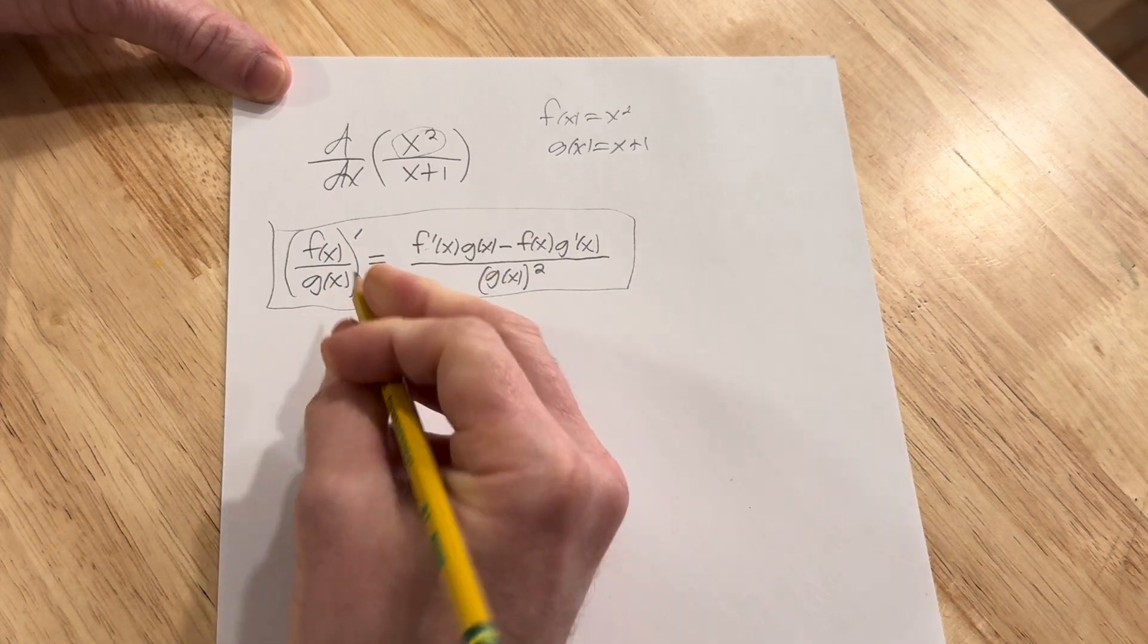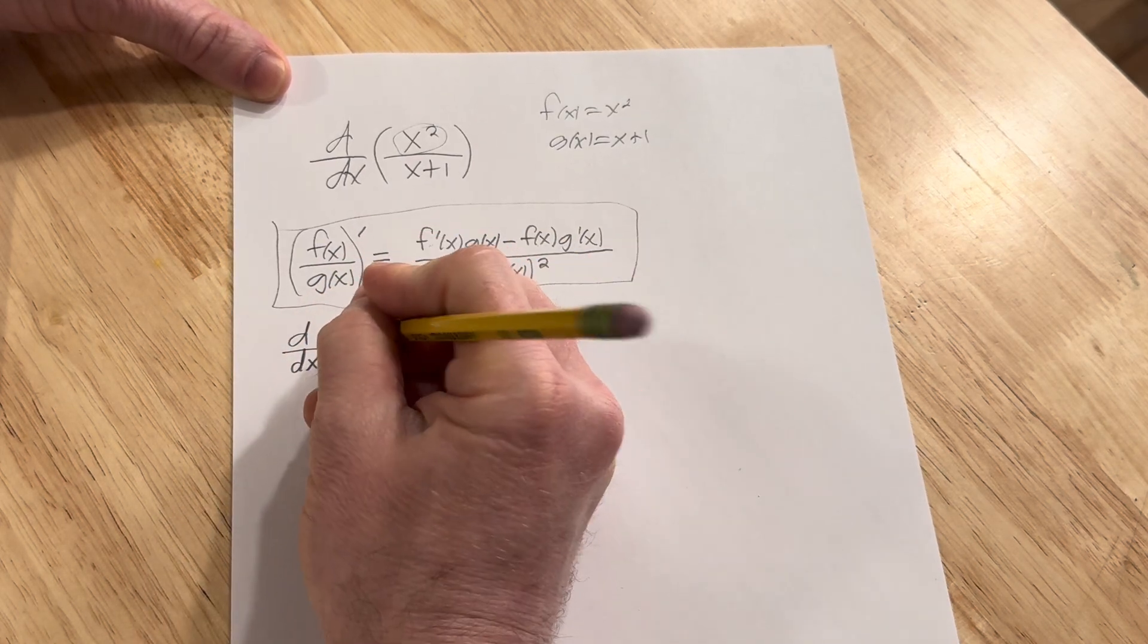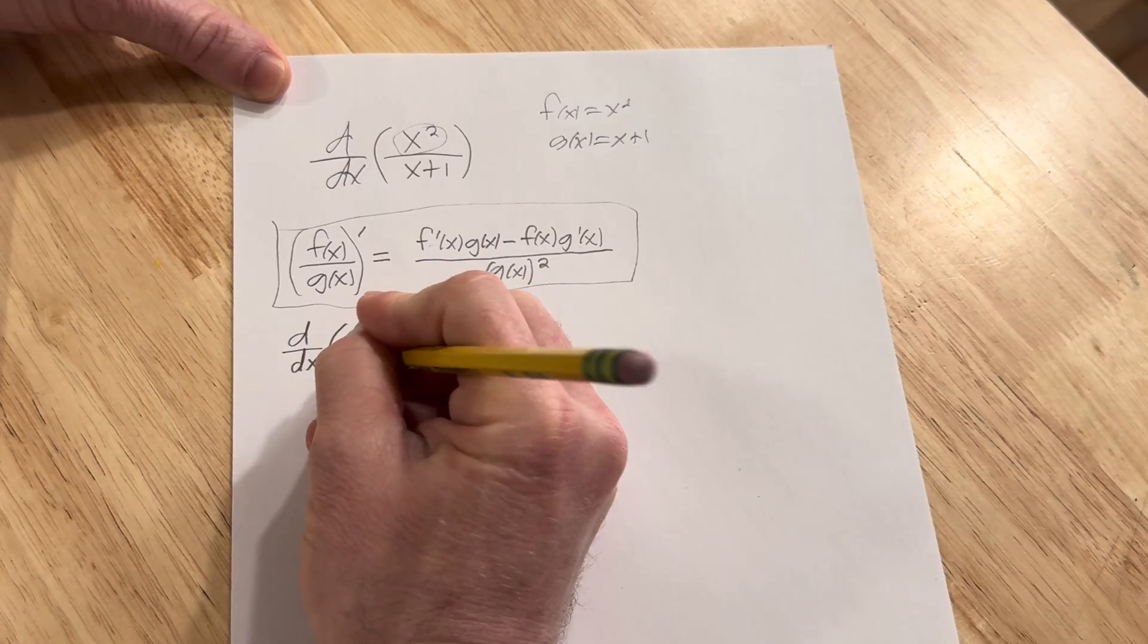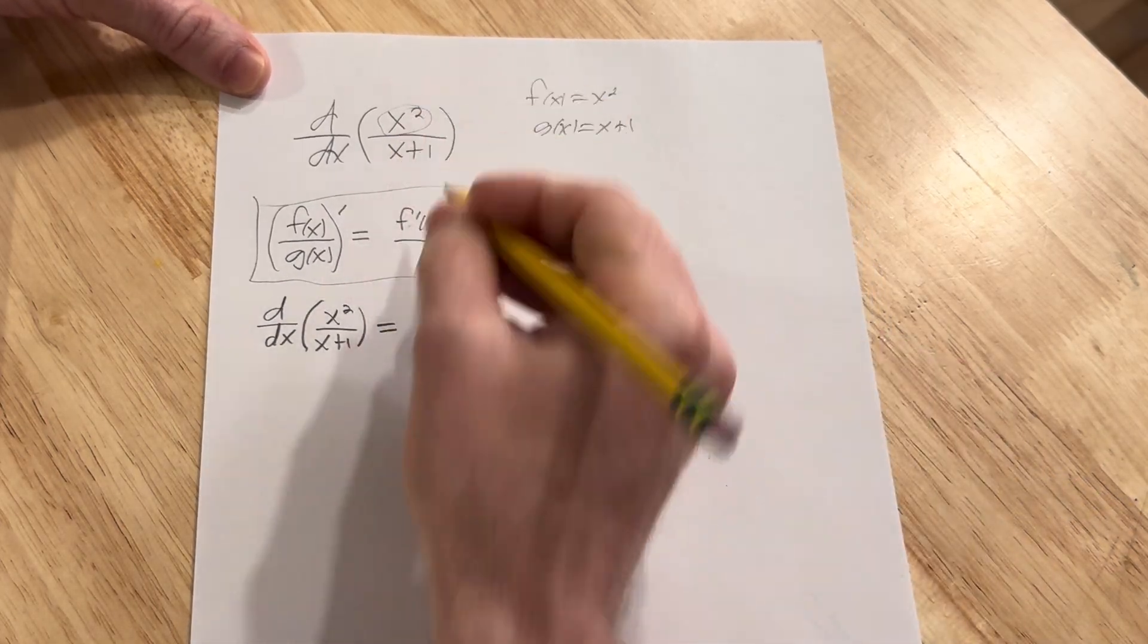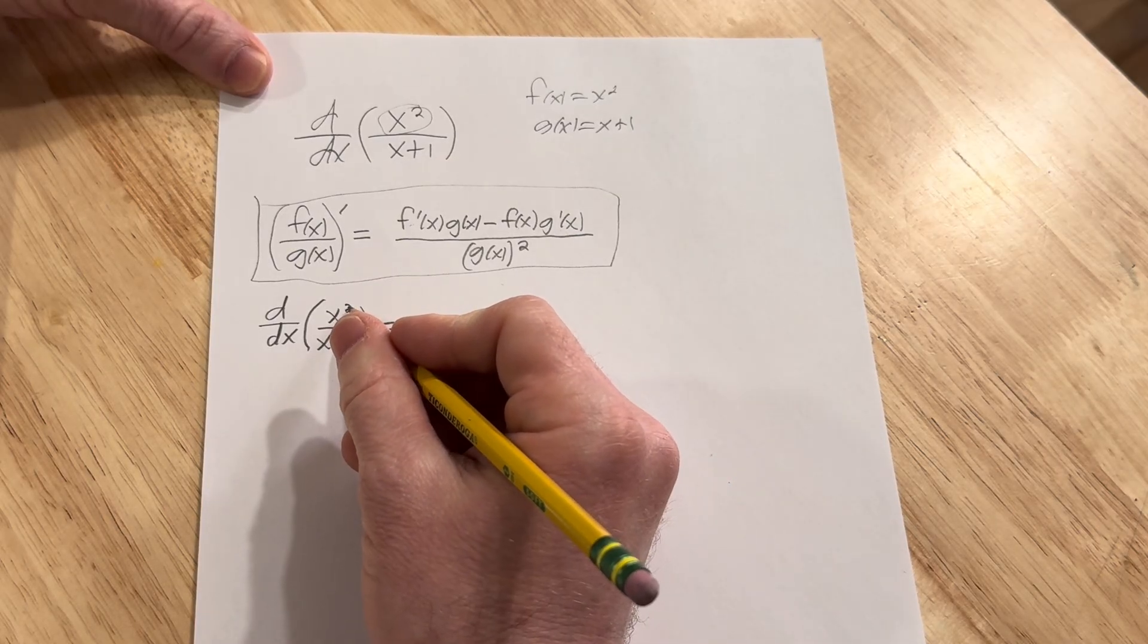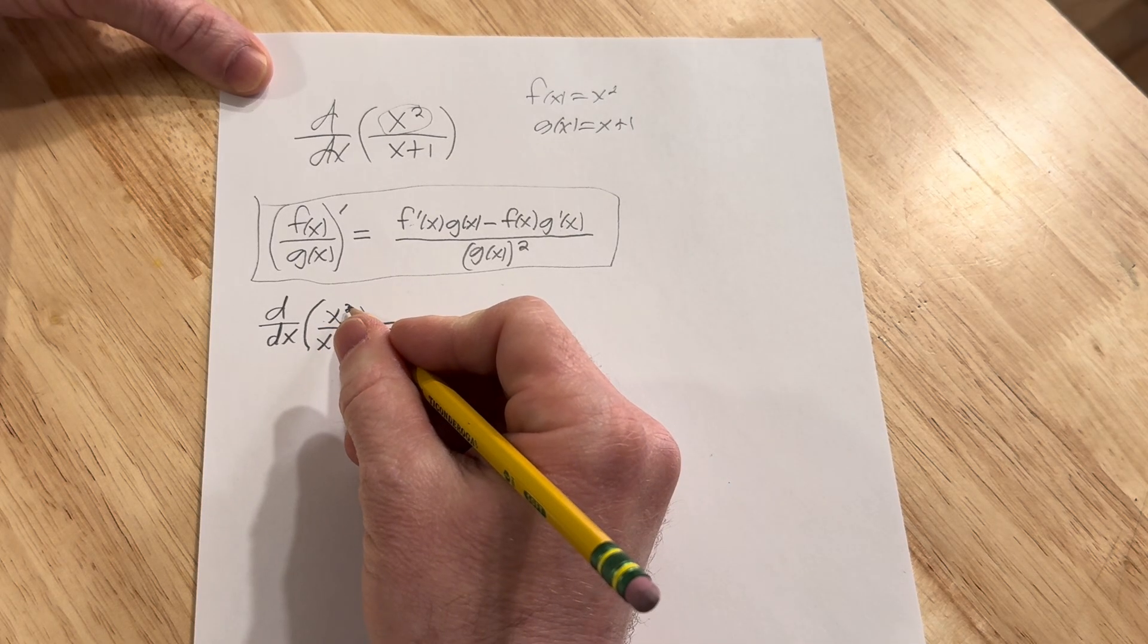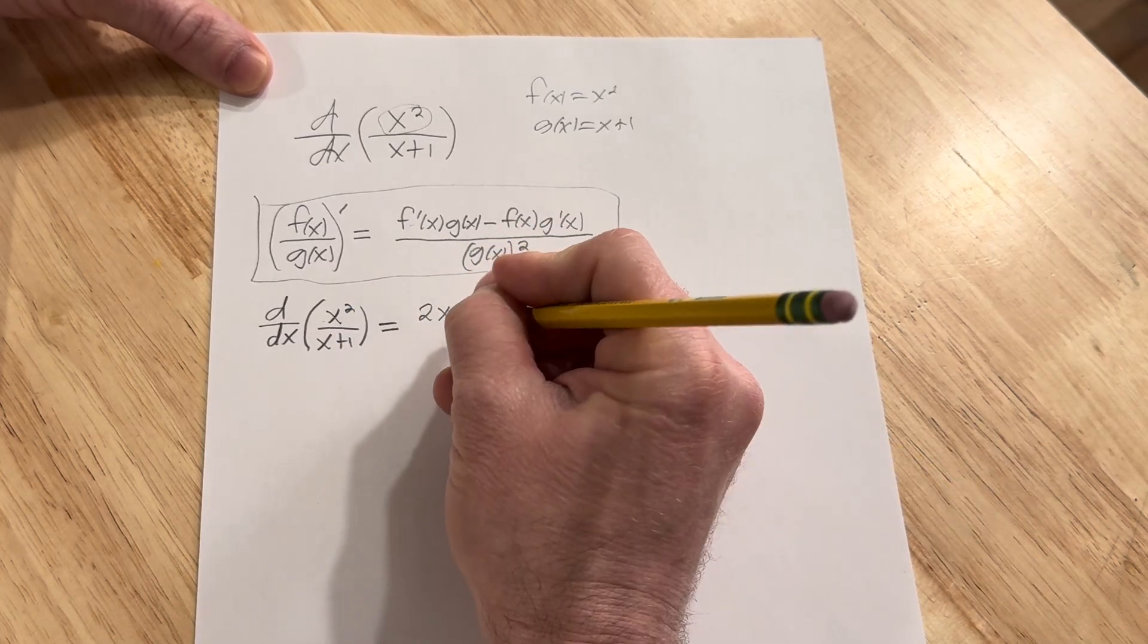So I'm going to write it again down here. We have d/dx of x squared over x plus 1. So it's the derivative of the top. The derivative of x squared is just going to be 2x. You use the power rule. You bring down the 2 and subtract 1 from the exponent. So it's 2x times the bottom, x plus 1.